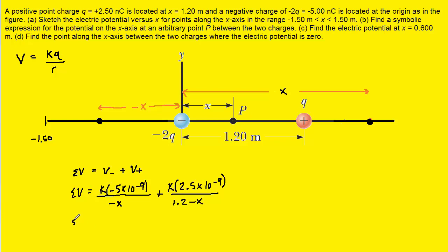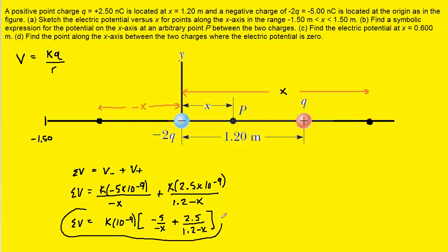To simplify, we can factor out k times 10 to the negative 9, leaving: k times 10 to the negative 9, multiplied by negative 5 over negative x plus 2.5 over 1.2 minus x. This is the function that gives the electric potential for points from negative 1.5 up to 0.